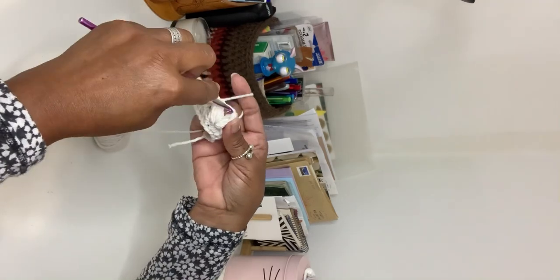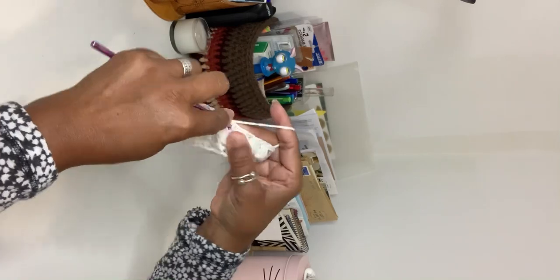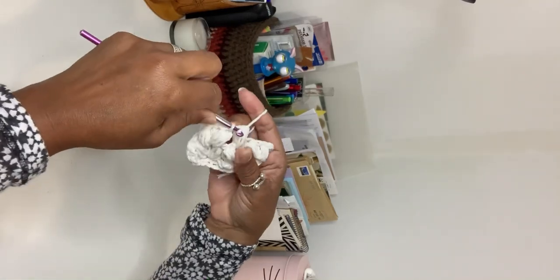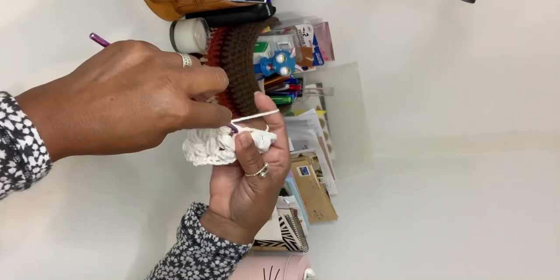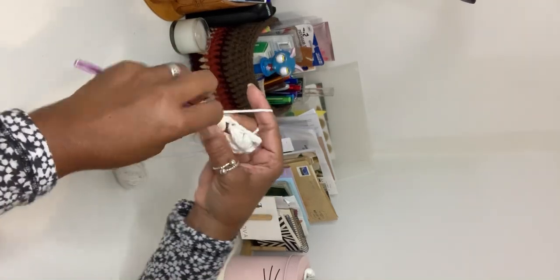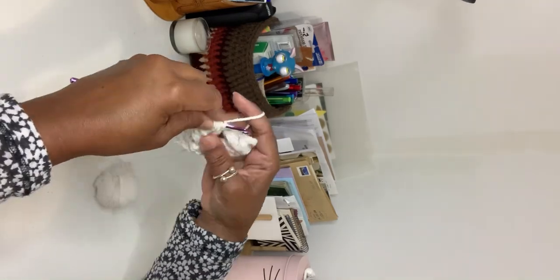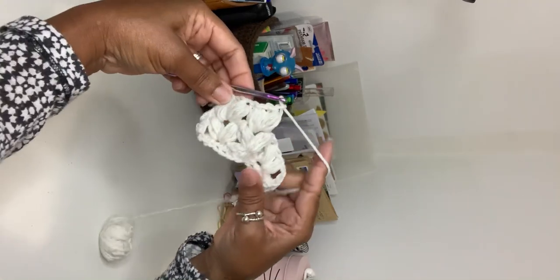You go over to the next one and do the same thing - one, two, three, four, one to close. One, two, three, four. There we go, that's the second row.